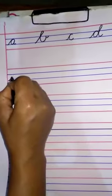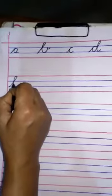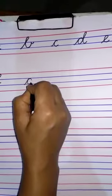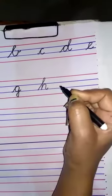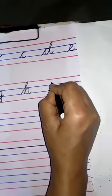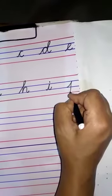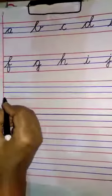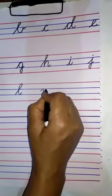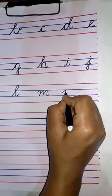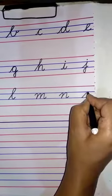Next letter comes small cursive F. Then next comes small cursive G. Then after that, small cursive K, small cursive L, small cursive M, small cursive N, small cursive O. Then next comes small cursive P.